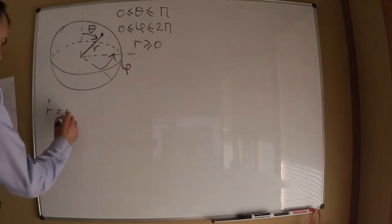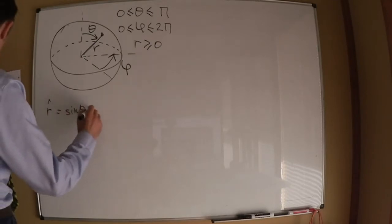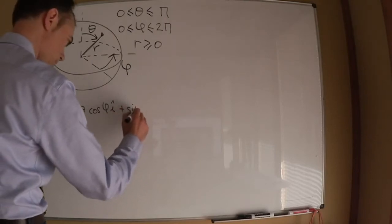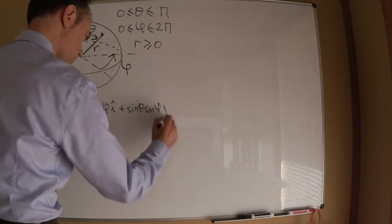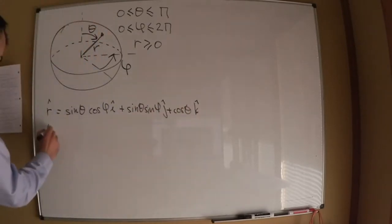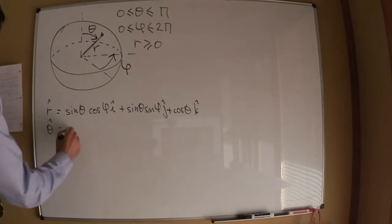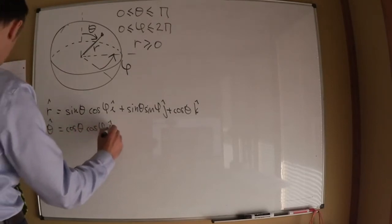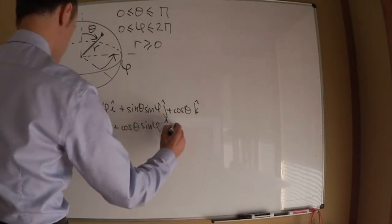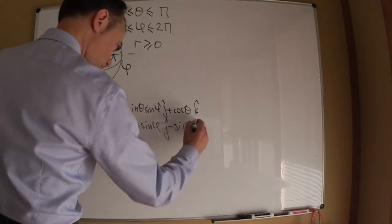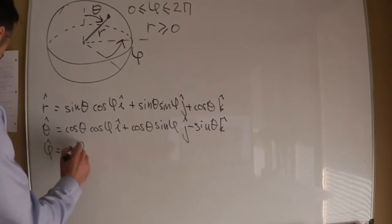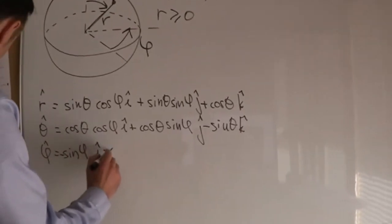The unit vectors in spherical coordinates read: r-hat equals sin(theta)cos(phi) i-hat + sin(theta)sin(phi) j-hat + cos(theta) k-hat. Theta-hat equals cos(theta)cos(phi) i-hat + cos(theta)sin(phi) j-hat − sin(theta) k-hat. And phi-hat equals −sin(phi) i-hat + cos(phi) j-hat.